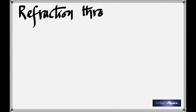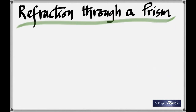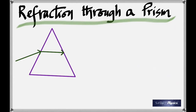Refraction through a prism. That's the outline of the prism. The incident ray is moving from air into glass — let's assume the prism is made of glass.